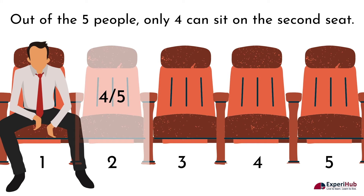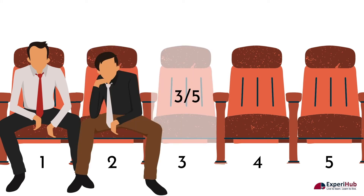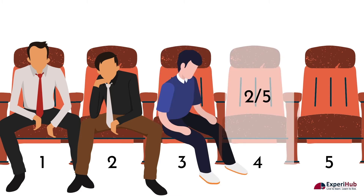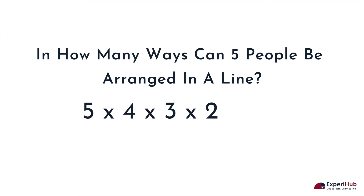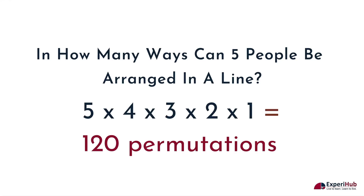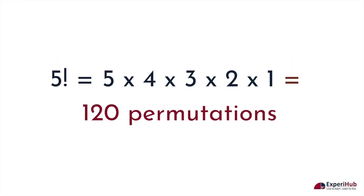Now there are three people who can sit in the third seat, two people who can sit in the fourth seat, and one person who can sit in the fifth seat. So there are 120 different permutations to arrange five people in a line. This is also the same as solving five factorial.